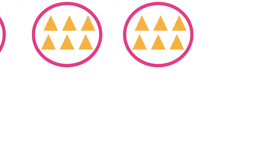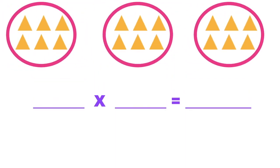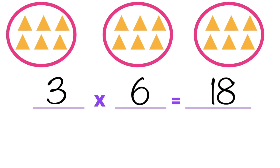Let's look at this illustration and give the multiplication sentence. The first factor is three, because we have three groups. The second factor is six, because we have six triangles in each group. The product is 18, because we have 18 triangles in total.